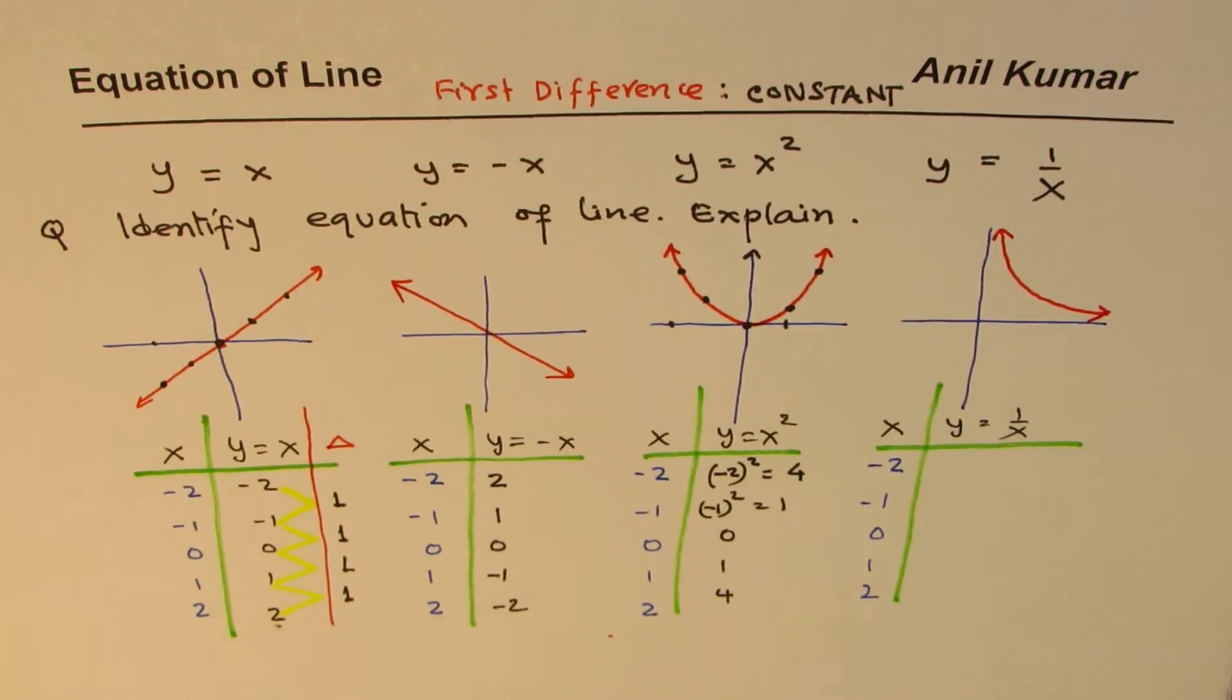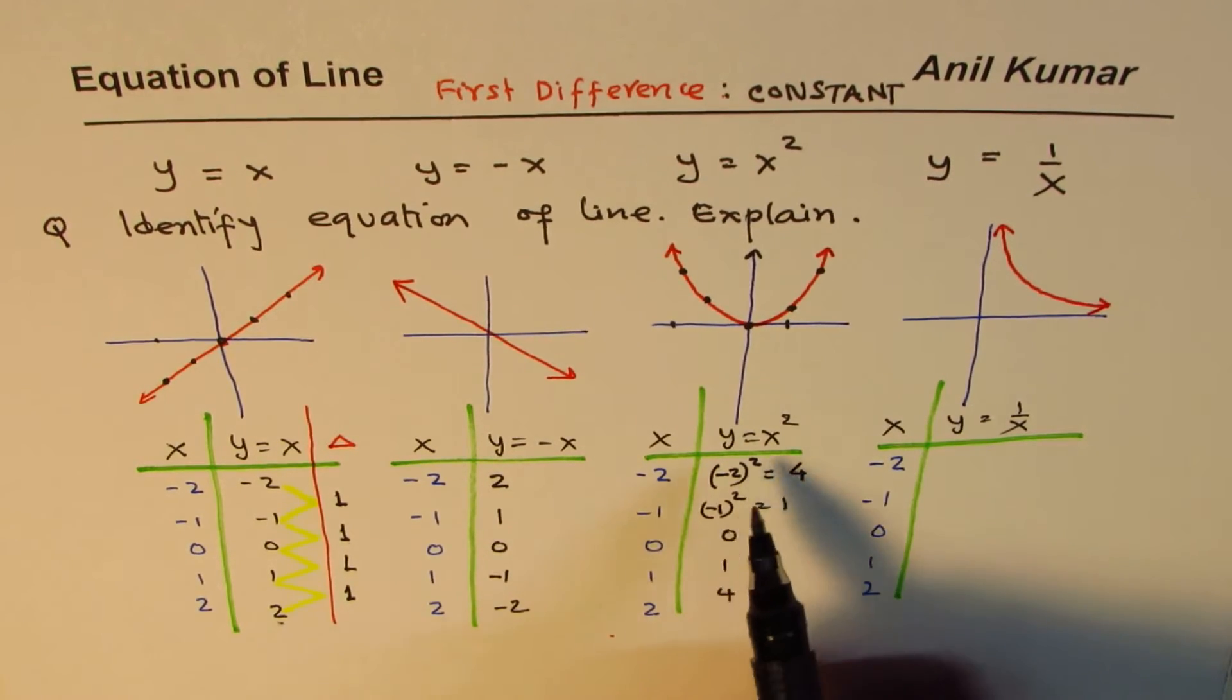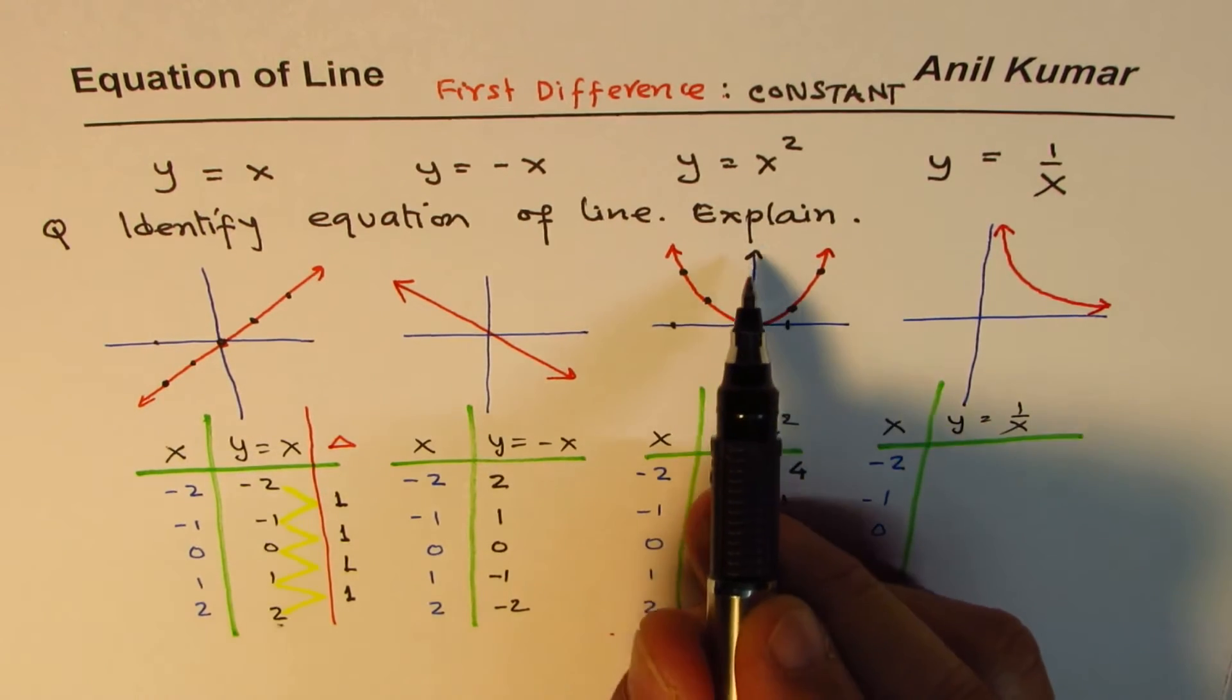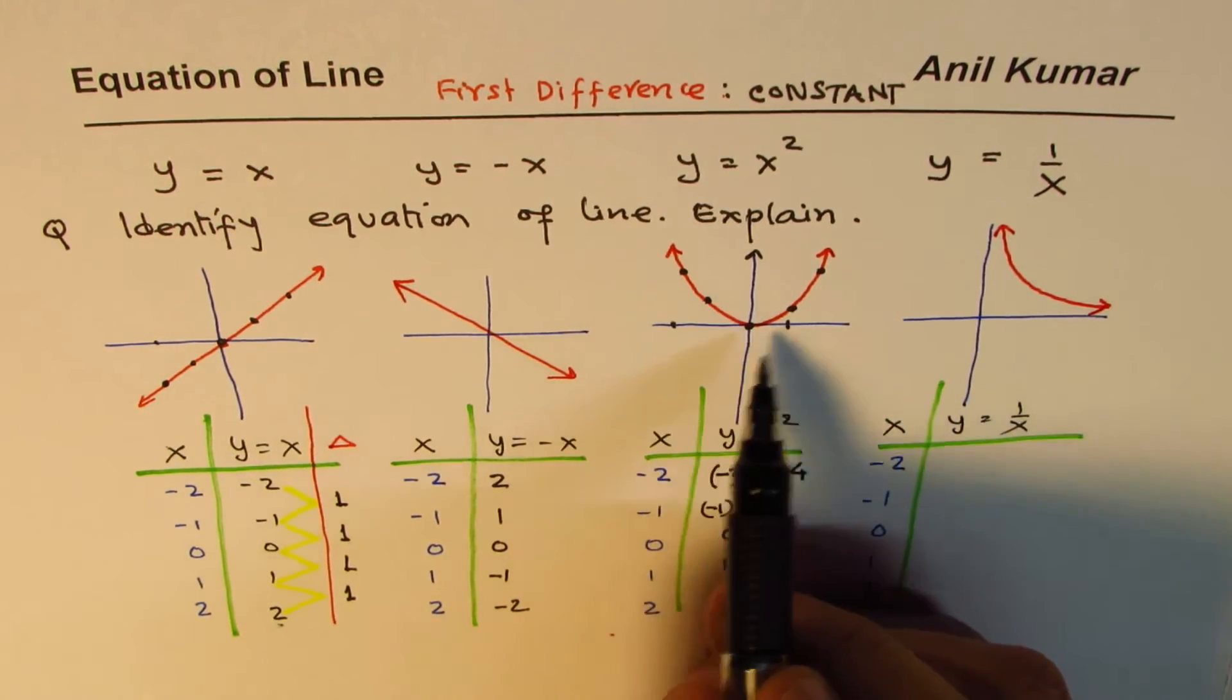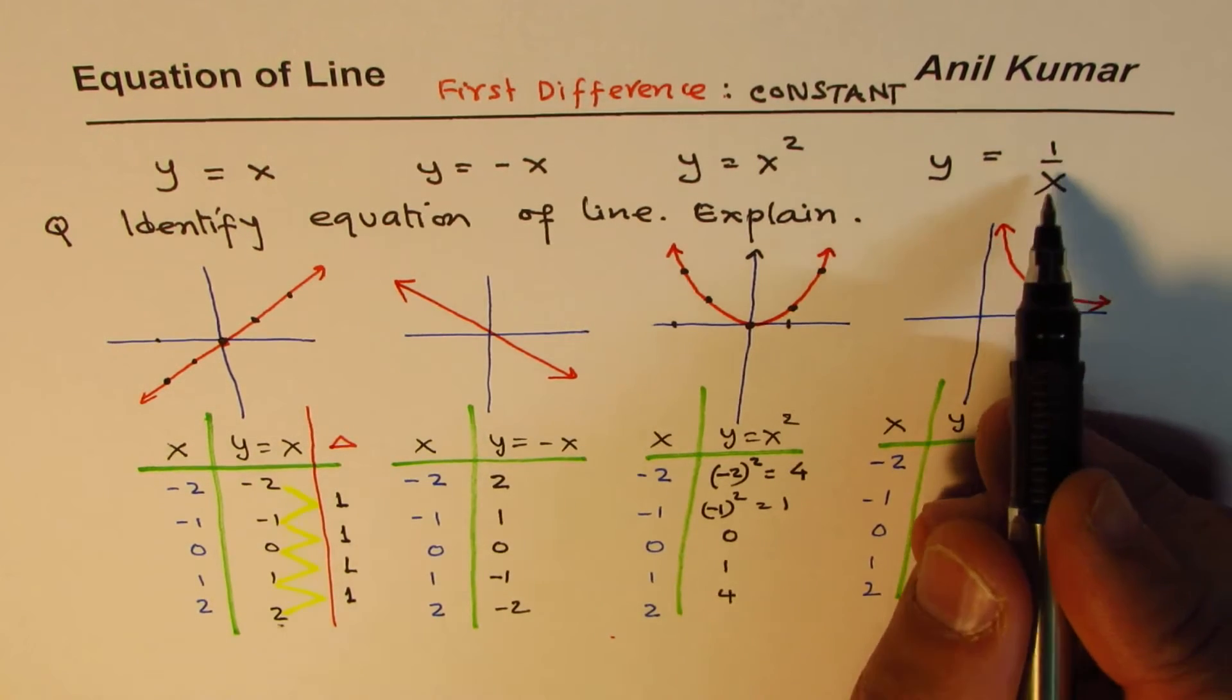This graph is symmetric about Y axis. Do you see that? What you observe here is that when Y equals X squared, we get our points as placed here. They are symmetric about the Y axis. This is a curved surface, we call it parabola. And definitely, it is not a straight line. So Y equals X squared will not represent a straight line.